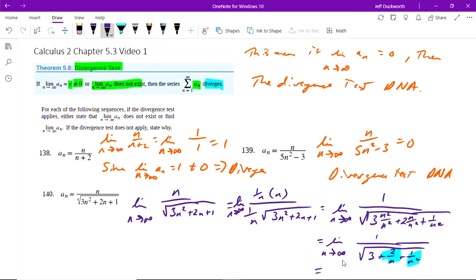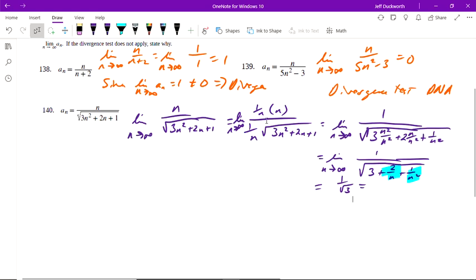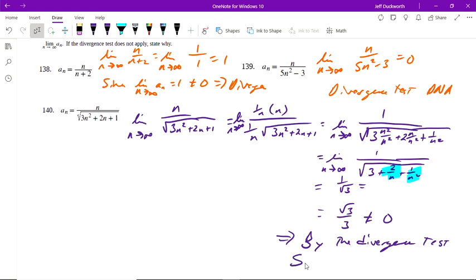So that equals one over root 3, or root 3 over 3. That does not equal zero. Therefore, by the divergence test, the sequence diverges, or the series diverges.